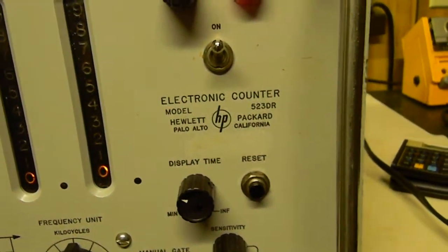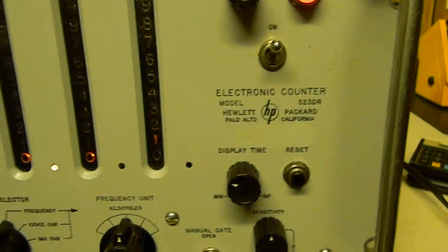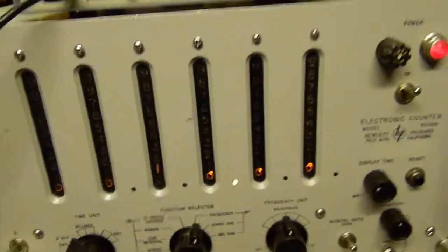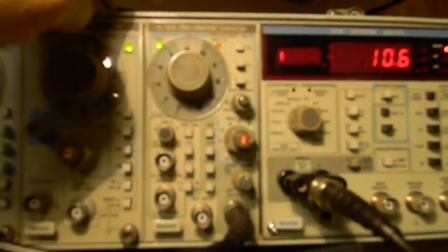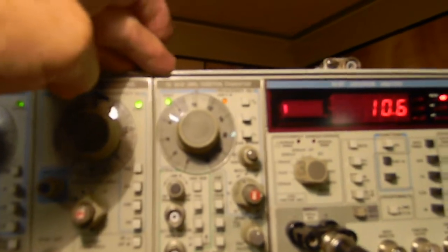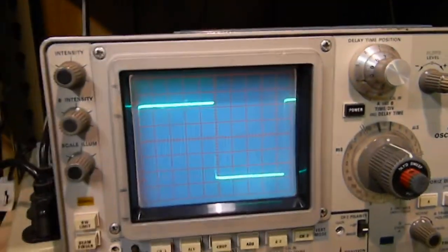This beauty has 65 vacuum tubes in it. I'll show you that in just a minute. But what I've got hooked up is a function generator right here, a Tektronix FG501A. We're putting out a square wave that's what we're going to be looking at over here on the counter.